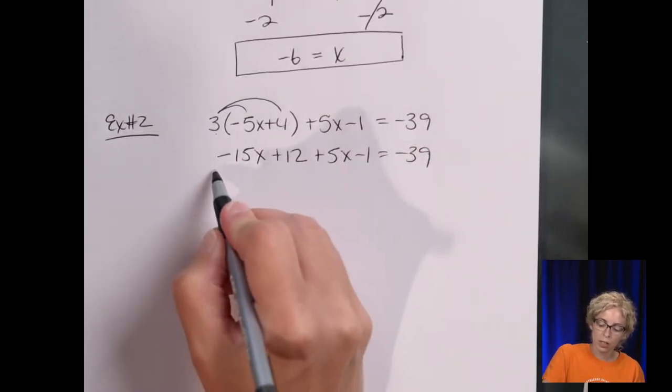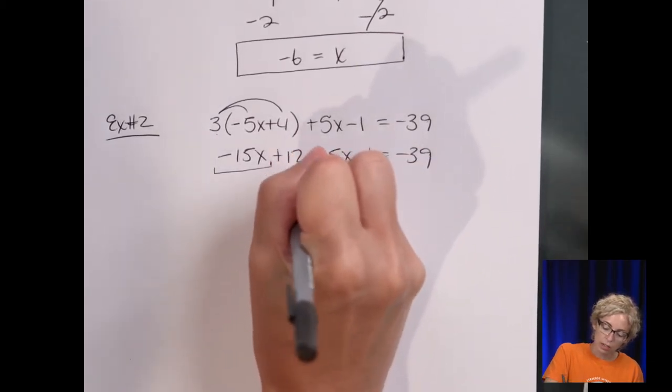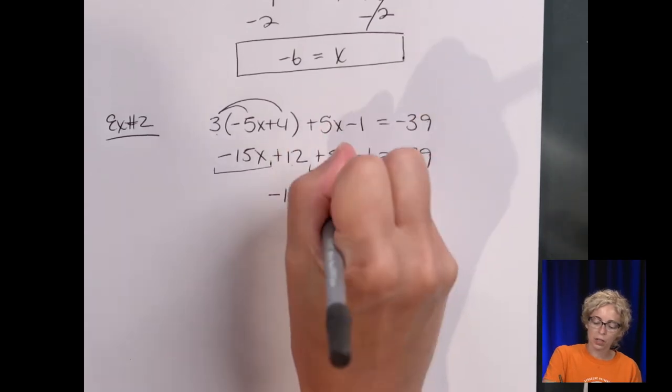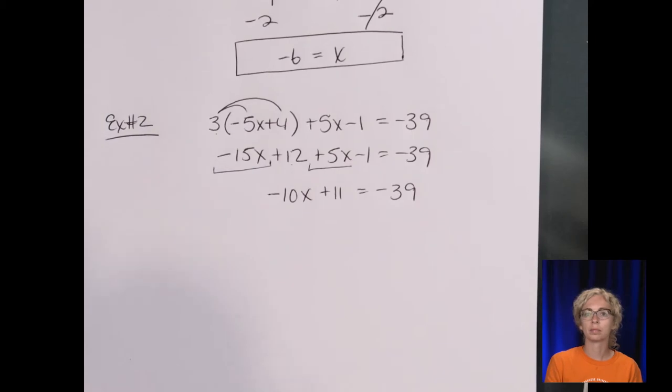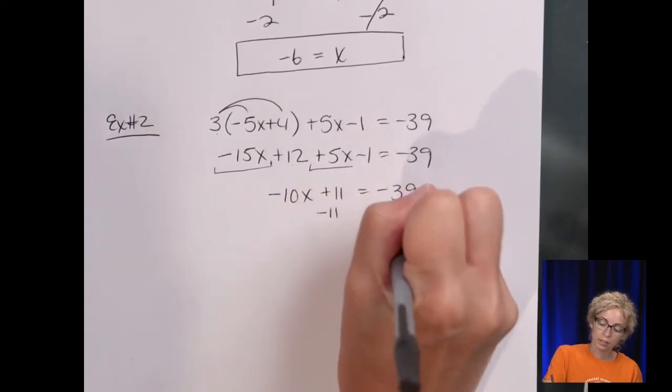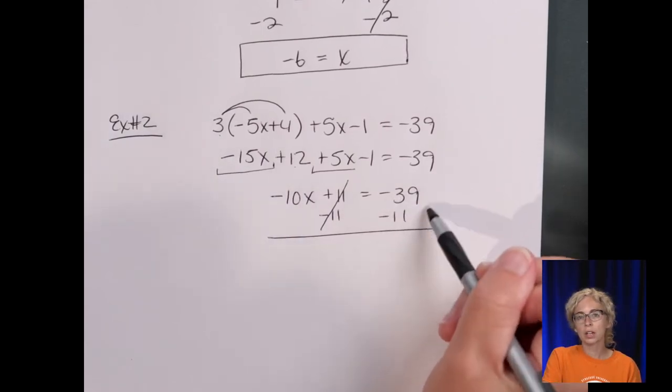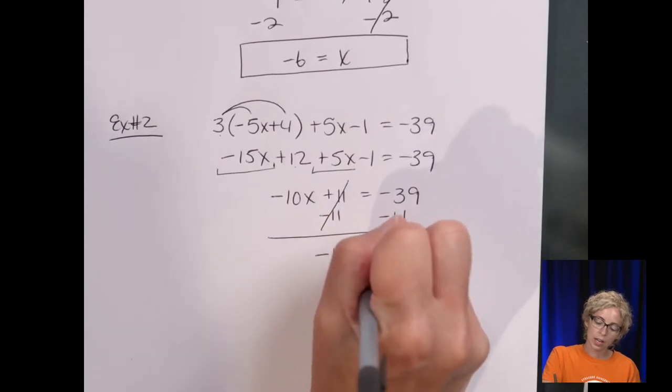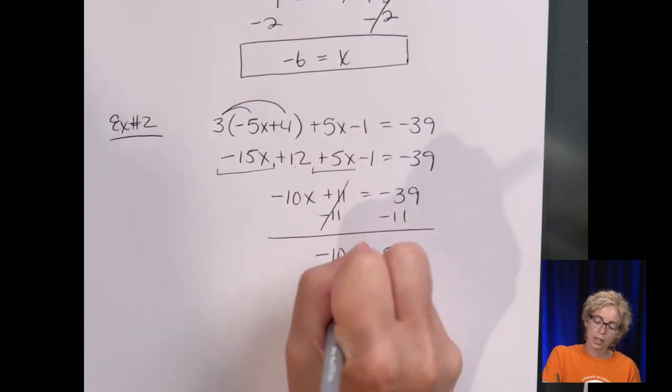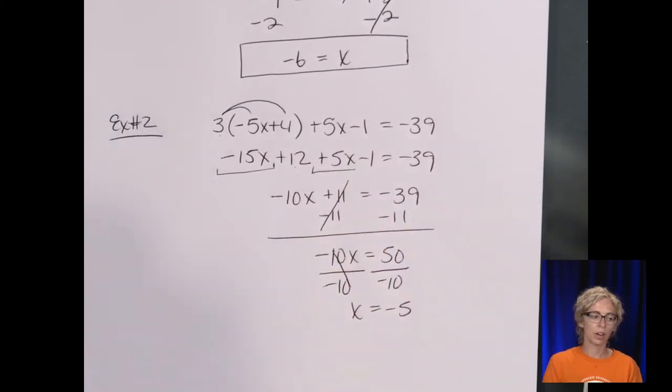And then I can copy the rest of the equation down. Combining like terms on the left side, we have the -15x and 5x, which is -10x. And then 12 - 1 is 11, and then equals -39. Subtract the 11, so they're both the same, so we're essentially adding 39 and 11, so 39, 40, 50. So -10x = 50, divide by -10, and we get x = -5.